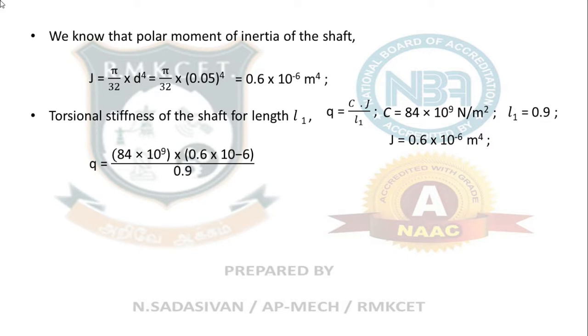Substitute all the values: C is 84 × 10⁹, J is 0.6 × 10⁻⁶ divided by 0.9, which is the length of the upper portion of the shaft above the flywheel. That gives me an answer around 56 × 10³ N·m as the torsional stiffness of the upper portion of the shaft.